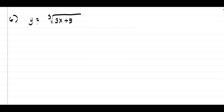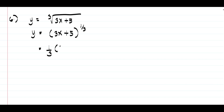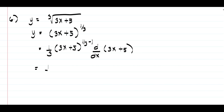On example number six, we have y equals cube root of 3x plus 5. First, rewrite the radical form in exponential form: y equals quantity 3x plus 5 raised to 1 third, since the index is 3 so the denominator of the exponent is 3. To find the derivative, we have 1 third times 3x plus 5 raised to 1 third minus 1, that is negative 2 thirds, times the derivative of 3x plus 5, which is 3.